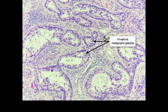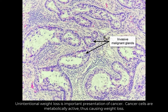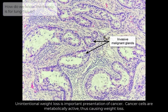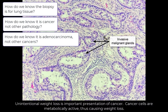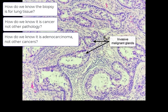This pathology slide is for adenocarcinoma, taken from a patient with weight loss and hemoptysis. In this discussion, we want to answer some questions: How do we know that the biopsy is for lung tissue? How do we know it is cancer, not inflammation or other types of pathology? How do we know it is adenocarcinoma, not other types of lung cancer? Also, we will see some additional features of this tumor.